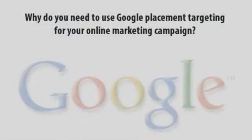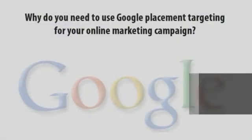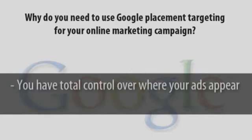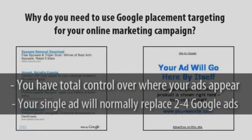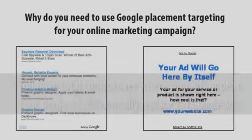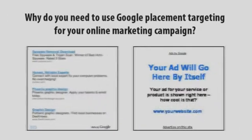So why do you need to use Google Placement Targeting for your online marketing campaign? Because you have total control over where your ads appear. This means if a site has Google Ads on it, you can place your ads directly on that site. Your single ad will normally replace the typical 2 to 4 Google Ads, giving you preeminence and domination on the website concerned.